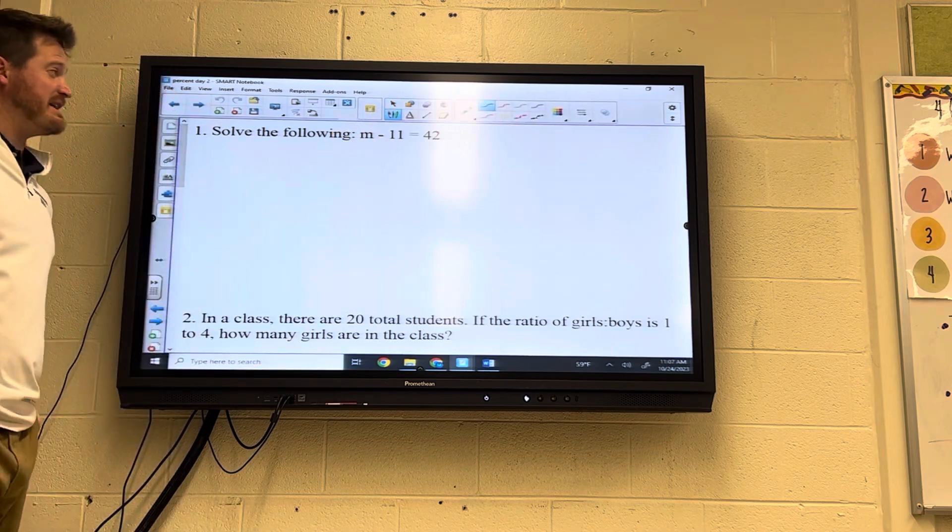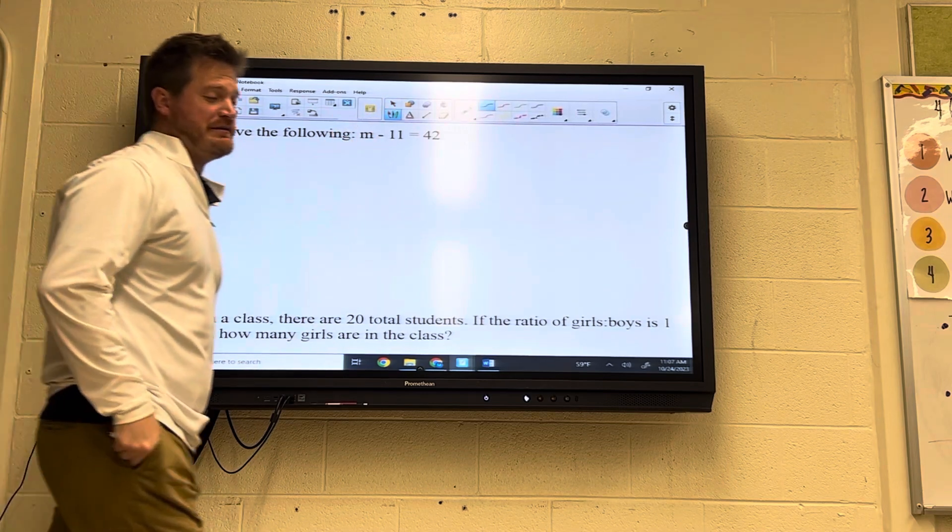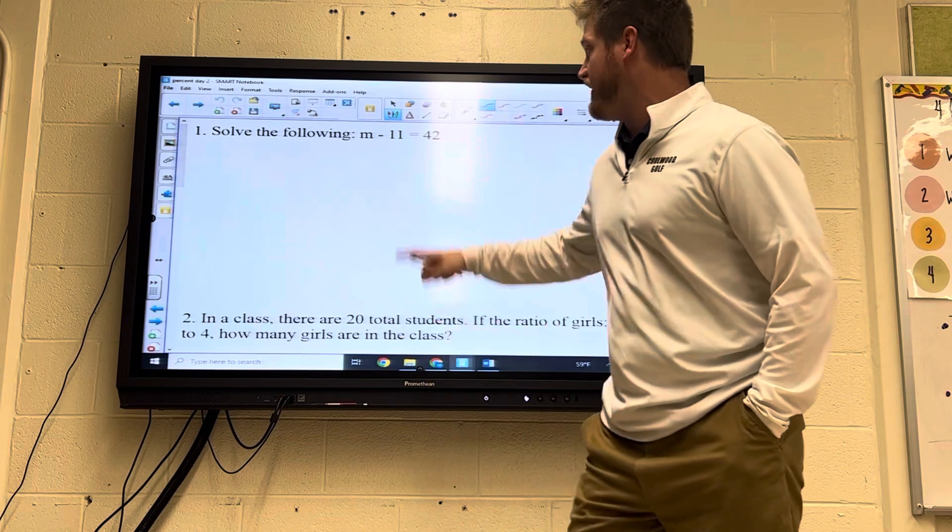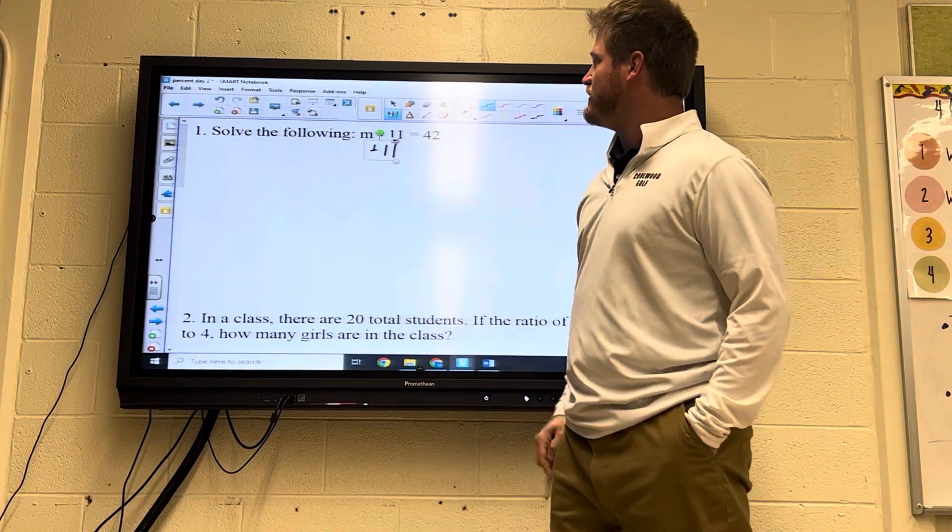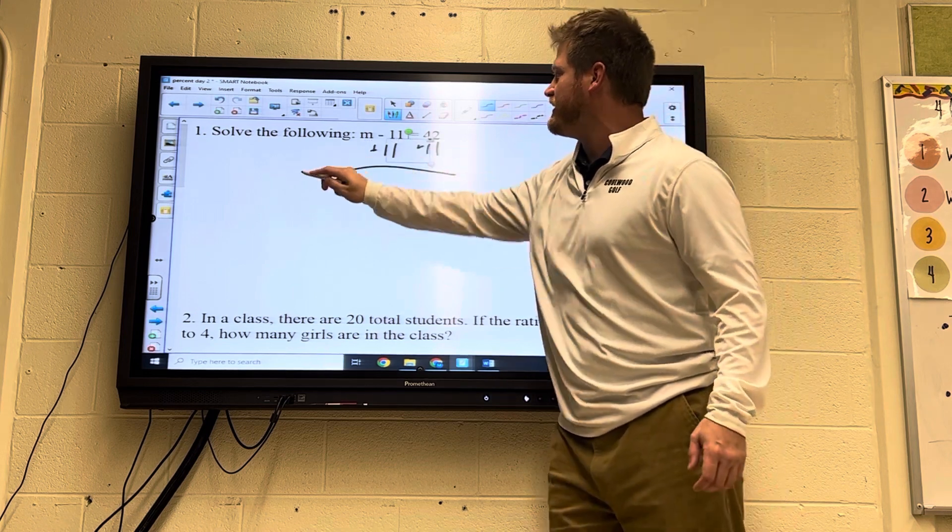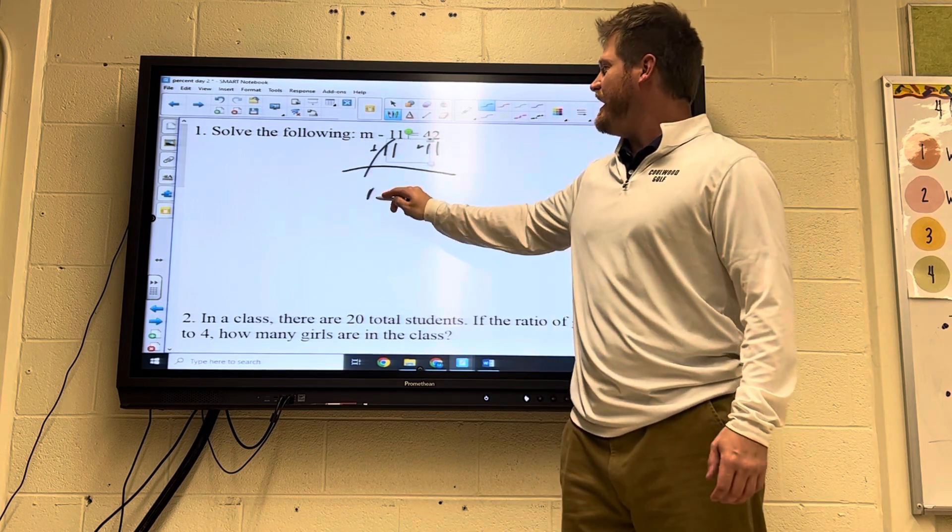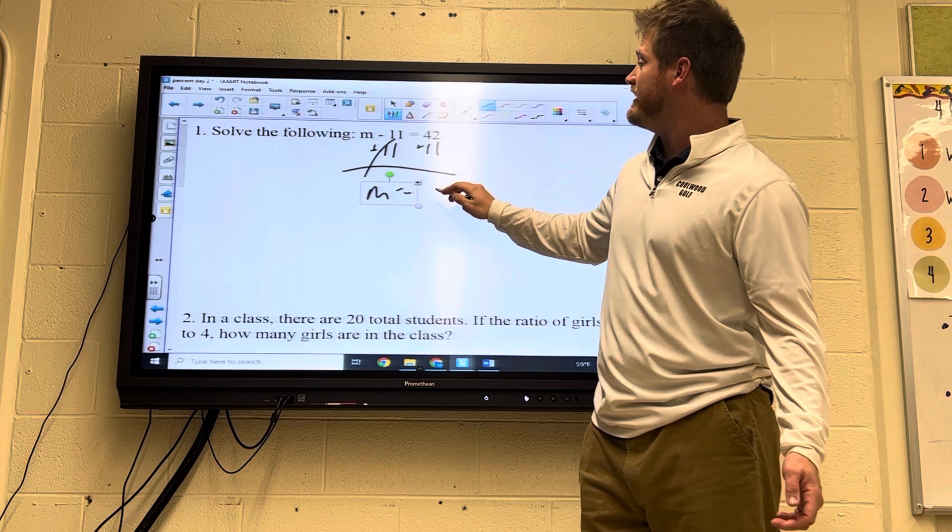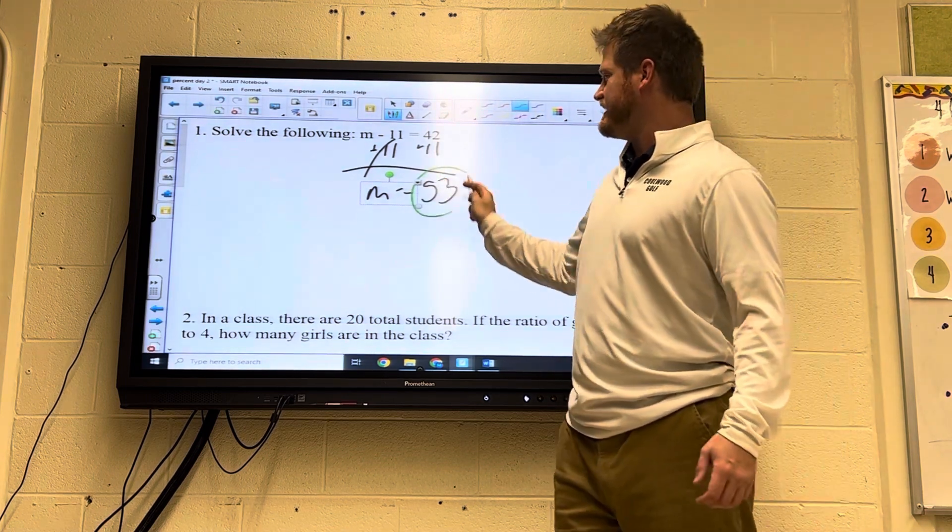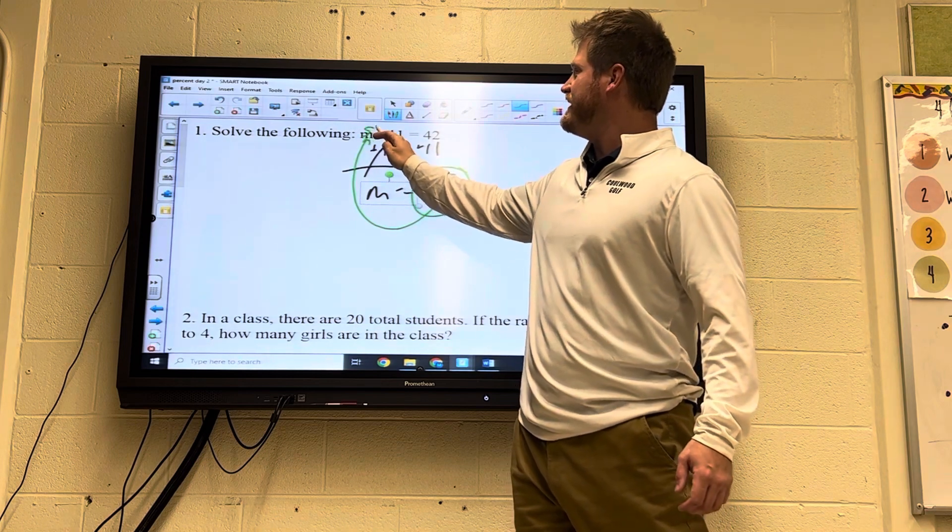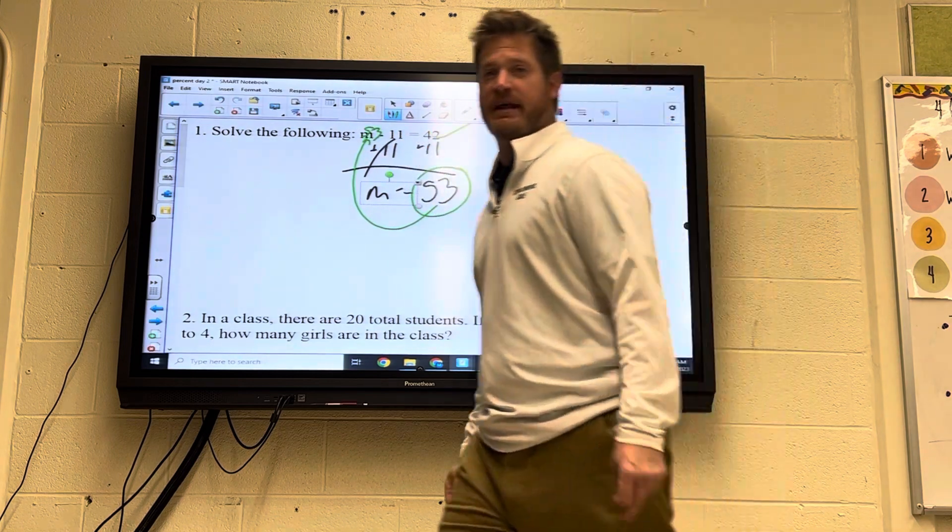Alright, hopefully you tried these on your own. Remember, solving number one, we're going to use the inverse operation. And right now, the variable is being subtracted by 11, and we know the opposite of minus 11 is to add 11. And what I do to one side, I'm going to do to the other. These 11s cancel out. M equals 42 plus 11 gives me 53. Now, I know this is correct because I take this number, plug it in, 53 minus 11 does give me that 42.